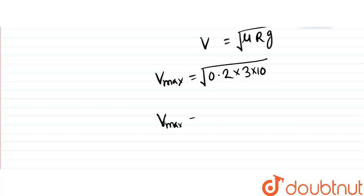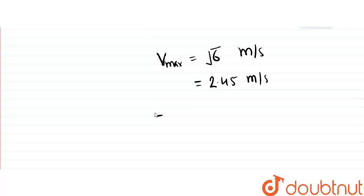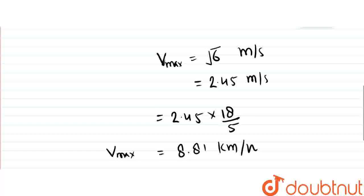√6 equals 2.45 meters per second. Converting to km per hour: 2.45 × 18/5 equals 8.81 km per hour. This is the maximum allowed speed for the cyclist to turn without skidding.